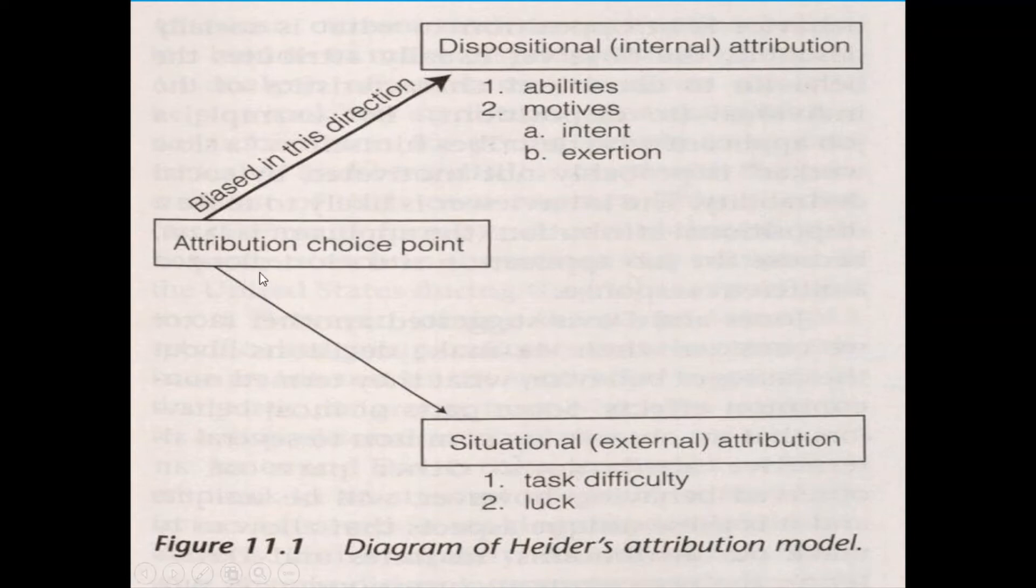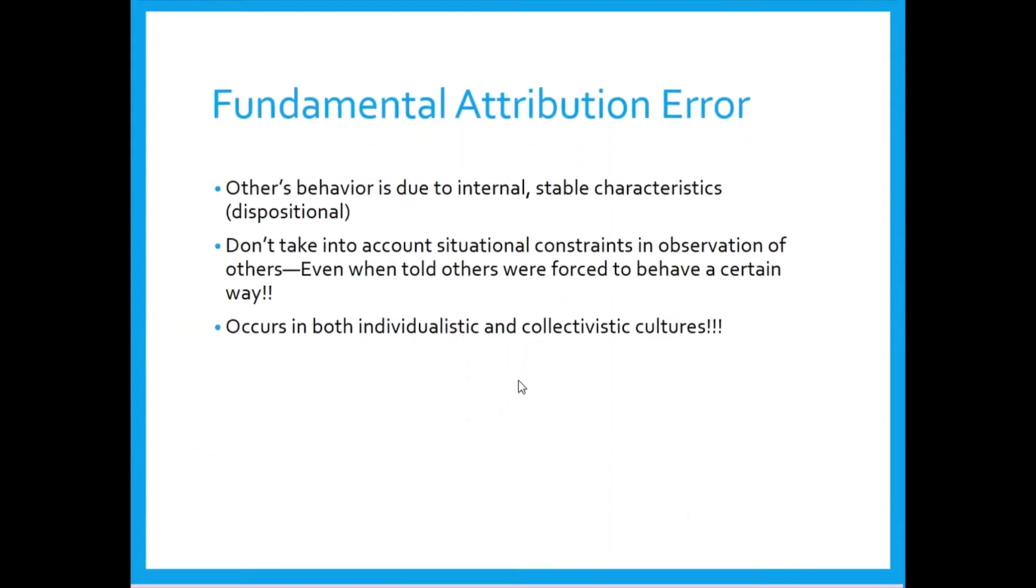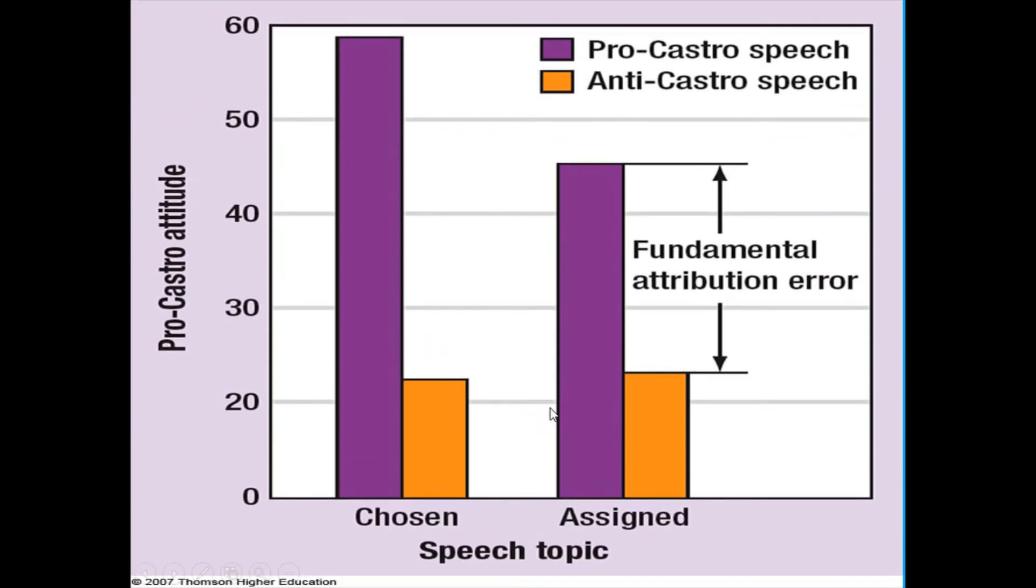Rather than me thinking about the situational factors that may have contributed to their lateness. So I'm less likely to think the student is late because of traffic or the availability of parking. Regardless of which of these is most likely to be the case in this particular scenario, I'm going to have a bias towards these internal or dispositional attributions. The classic study of Jones and Harris demonstrates this fundamental attribution error.